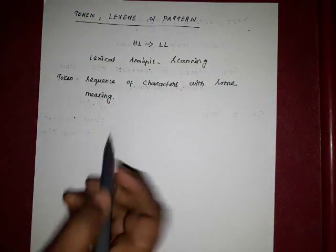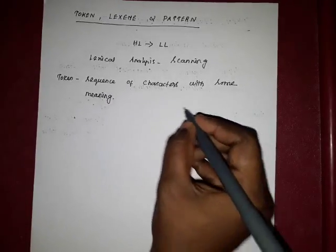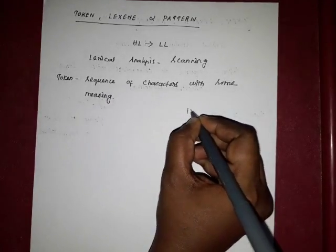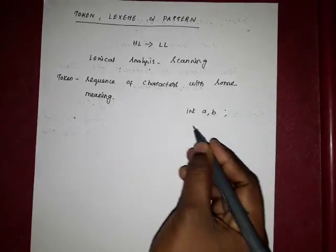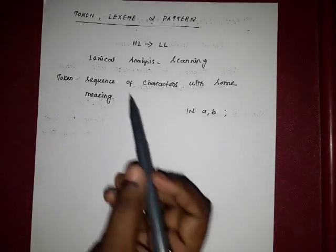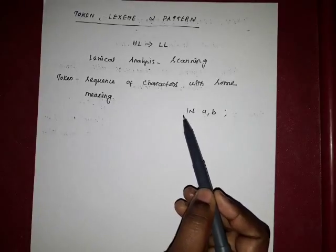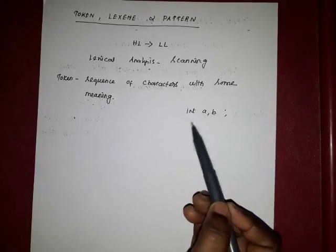Token is nothing but the sequence of characters with some meaning. For example, consider 'integer a, b' — it is part of the source program and it is the input given to lexical analysis. Reading from left to right, every character is read.